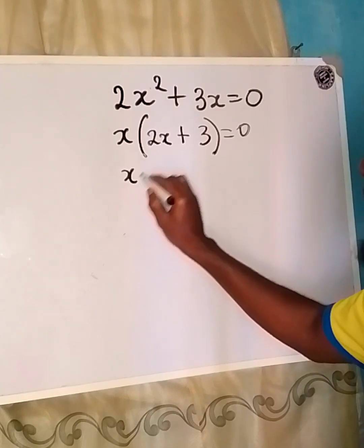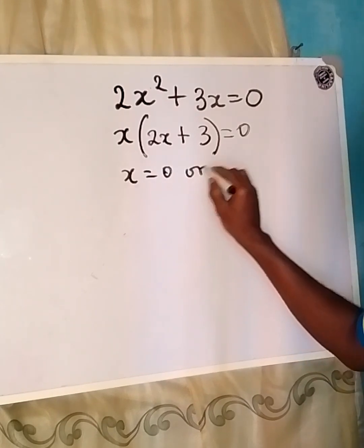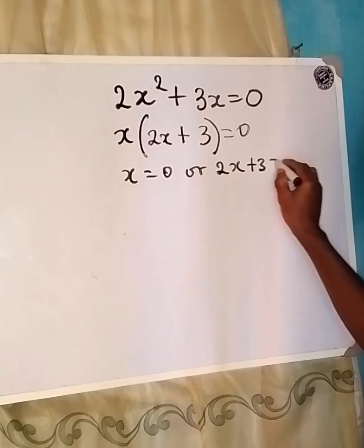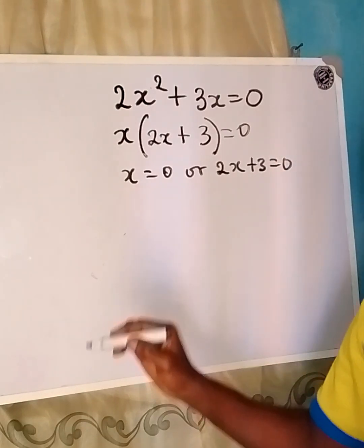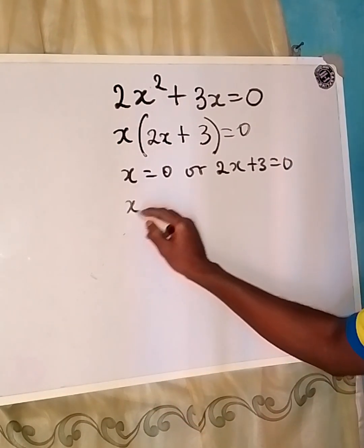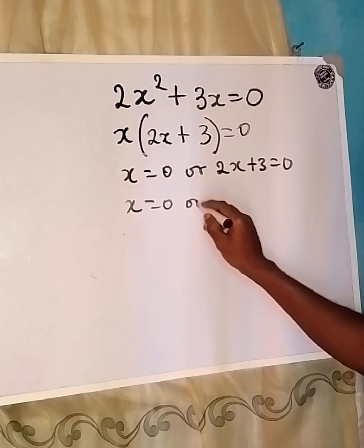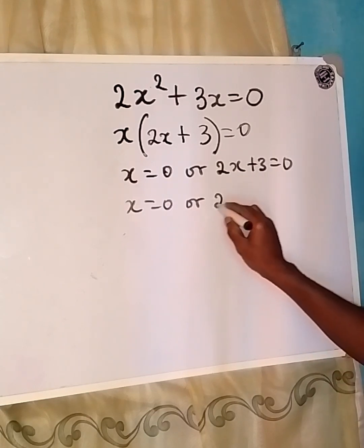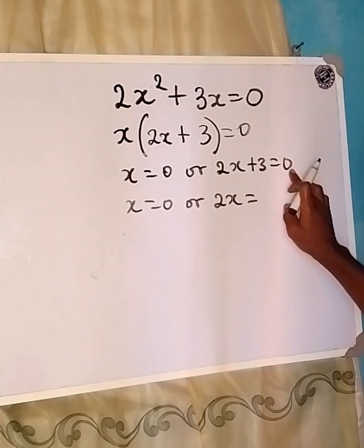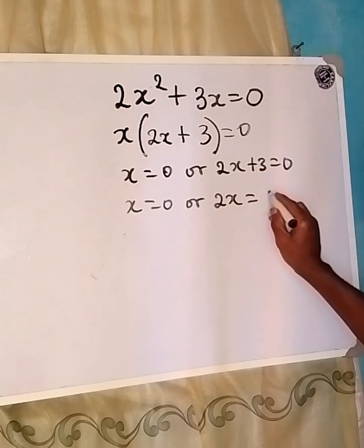So it is either x is equal to 0 or 2x plus 3 is equal to 0. Now this x here remains 0 or from here 2x will be equal to 0 minus 3 and that becomes minus 3.